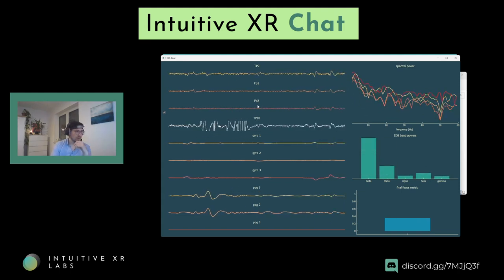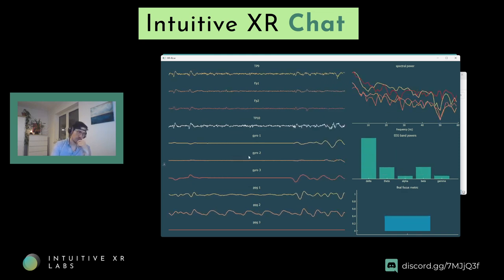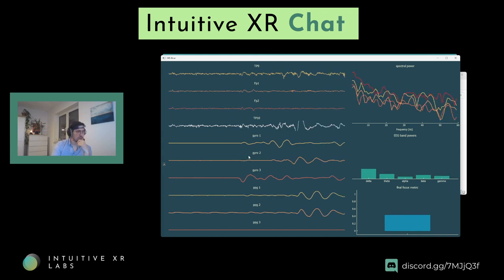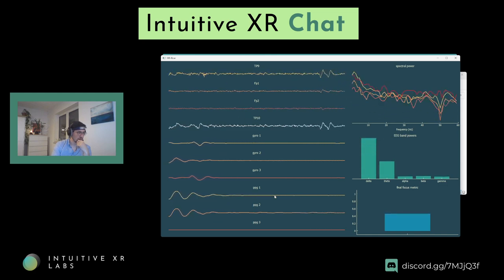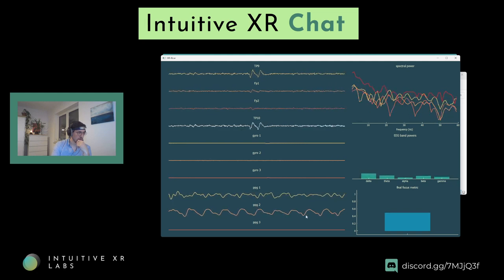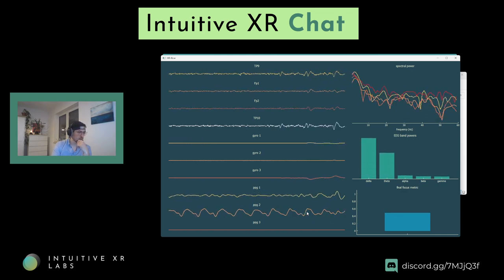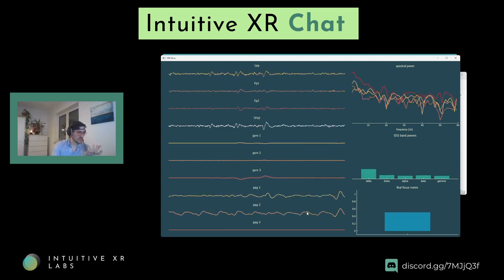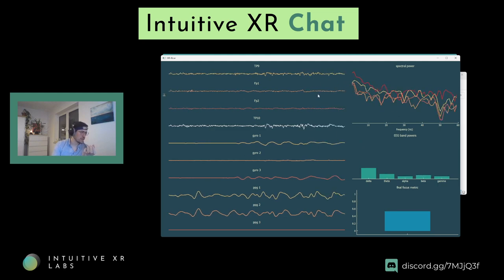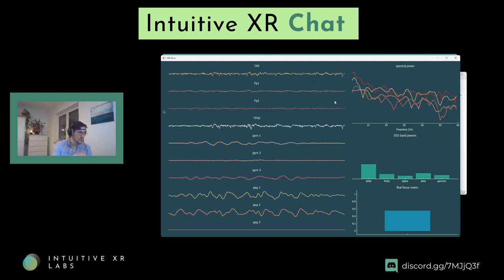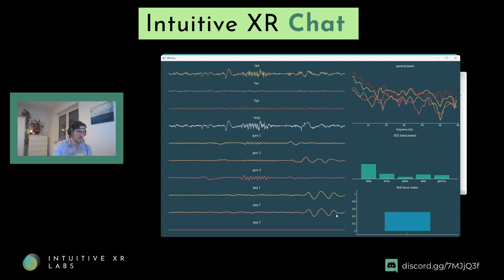The XR Suite doesn't only cover electroencephalography — it also has head motion from a gyro, so if I move my head around you can see that reflected in the measurements. It also has a PPG — photoplethysmography — and with that you can see my heartbeat. This shows blood pressure going up and down depending on the beat. The PPG signal is very easy to disturb if I move around, unlike the EEG which stays rather stable.